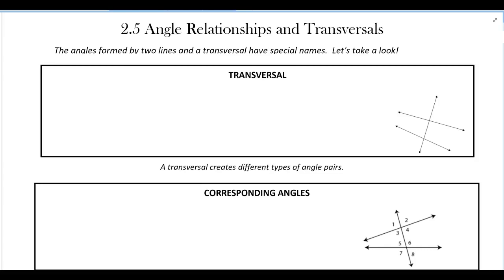In this video I'm going to continue to discuss angle relationships and transversals. Let's talk about what a transversal is. You can see in the picture here I have three separate lines, and basically the transversal is a line